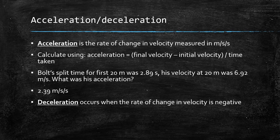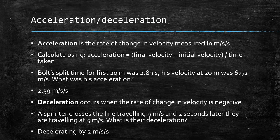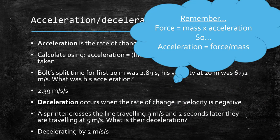Deceleration occurs when the rate of change in velocity is negative. For example, a sprinter crosses the line travelling at 9 metres per second, and 2 seconds later they are travelling at 5 metres per second. Final velocity 5 minus initial velocity 9 gives minus 4; divided by time taken of 2, gives minus 2 metres per second squared. In the exam, make sure you identify it as deceleration and not acceleration. Remember: force equals mass times acceleration, so acceleration equals force divided by mass.